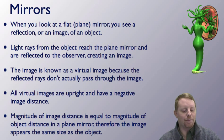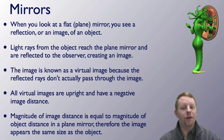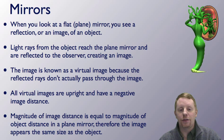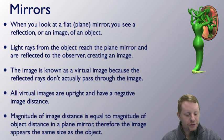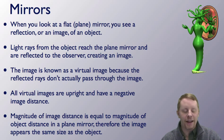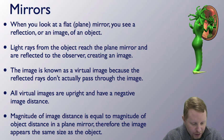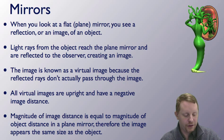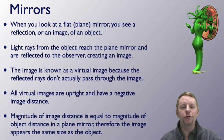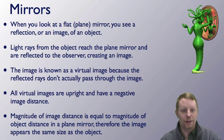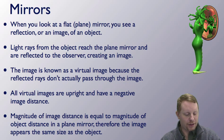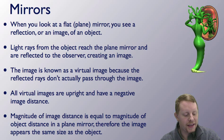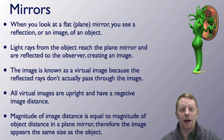When you look at a flat plane mirror, you see a reflection or an image of an object. The light rays from the object reach the plane mirror and they're reflected to the observer, creating an image. The image is known as a virtual image because the reflected rays don't actually pass through the image. You can't project a virtual image onto a screen. All virtual images are upright and they have a negative image distance. The magnitude of image distance is equal to the magnitude of object distance in a plane mirror — they're the same. Therefore, the image appears the same size as the object in a plane mirror.